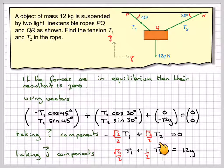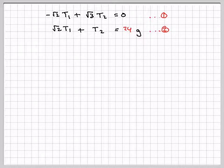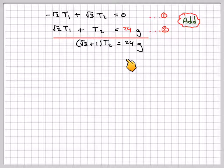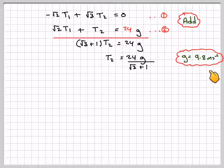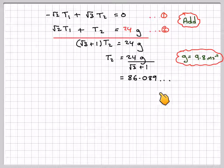Now if we multiply the top one by 2, that will still equal 0. If we multiply this one by 2, it will become 24G. So doing that just to make life easy for ourselves, and then if we add the two equations, this bit will cancel out, and here we get (root 3 plus 1) T2 equals 24G. So T2 will be 24G over root 3 plus 1. And taking G to be 9.8 meters per second squared, we're going to have 86.089.